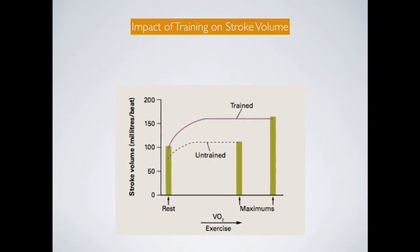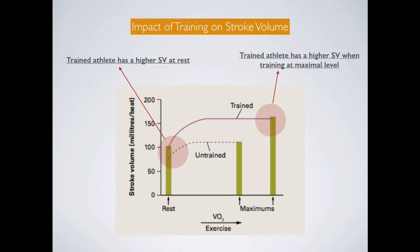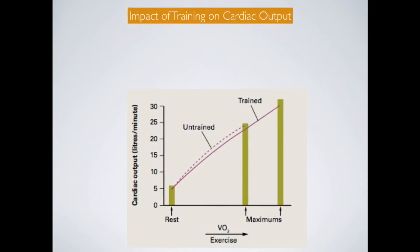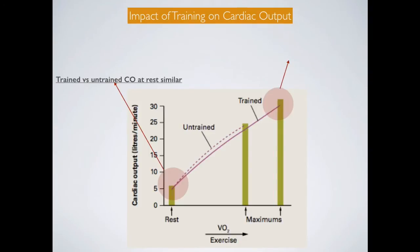The impact of training on stroke volume is easy to see in this graph. The trained athlete has a higher stroke volume at rest and also a higher stroke volume when training at maximal level. In terms of cardiac output, it is fairly similar at rest between a trained and untrained athlete. However, when training at maximal level, cardiac output is significantly higher for a trained athlete.